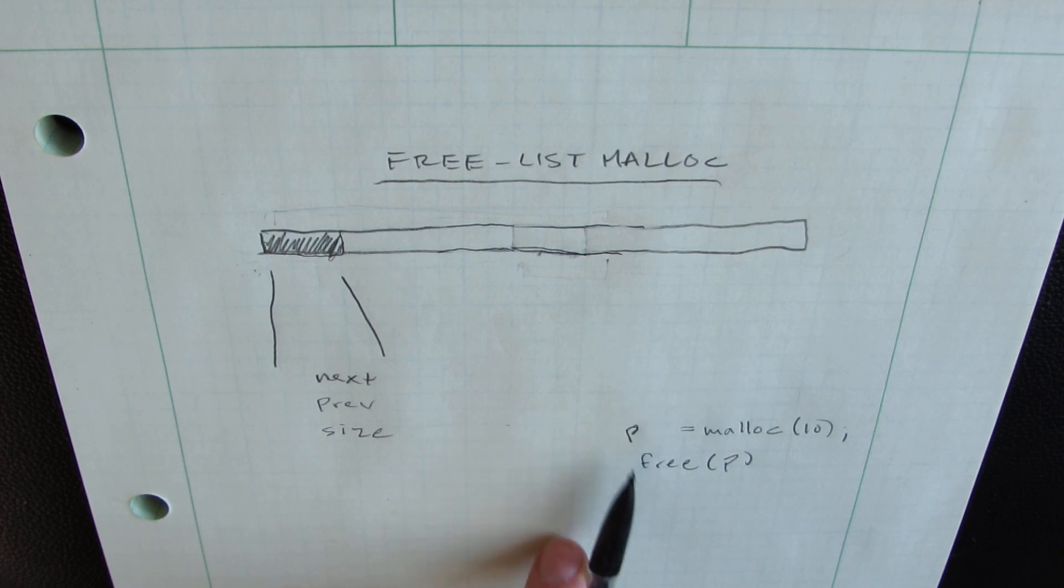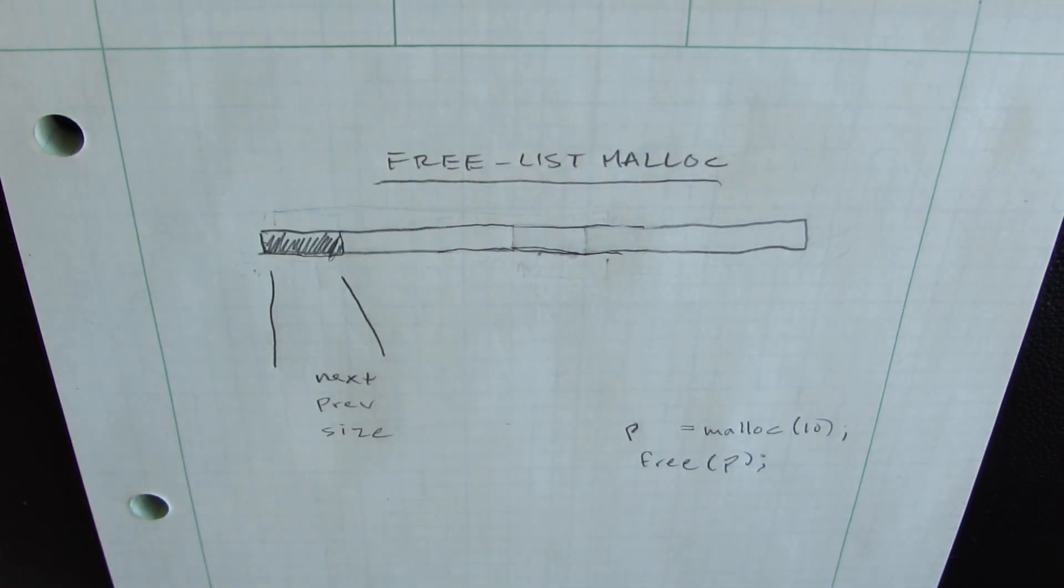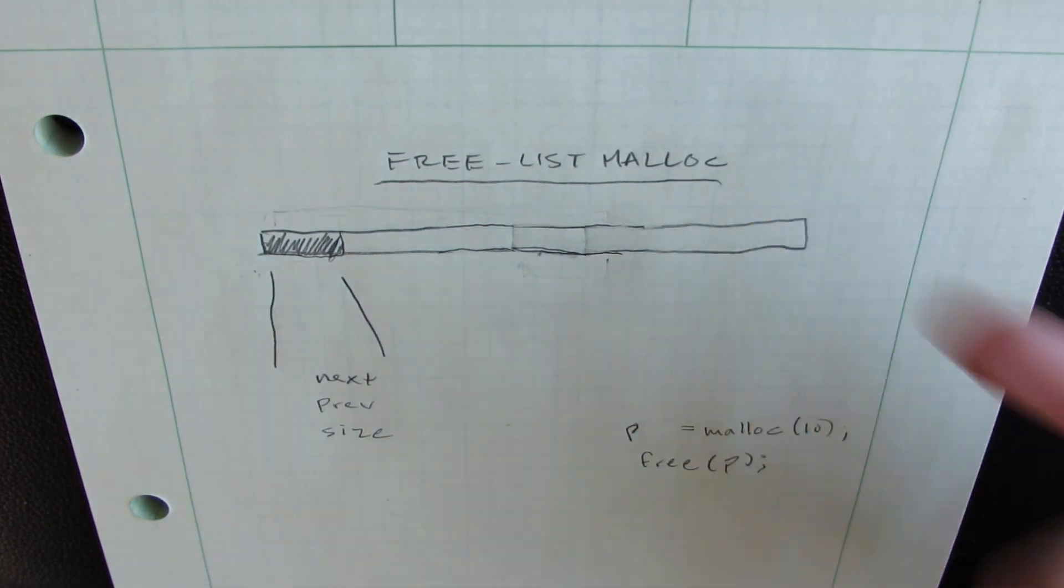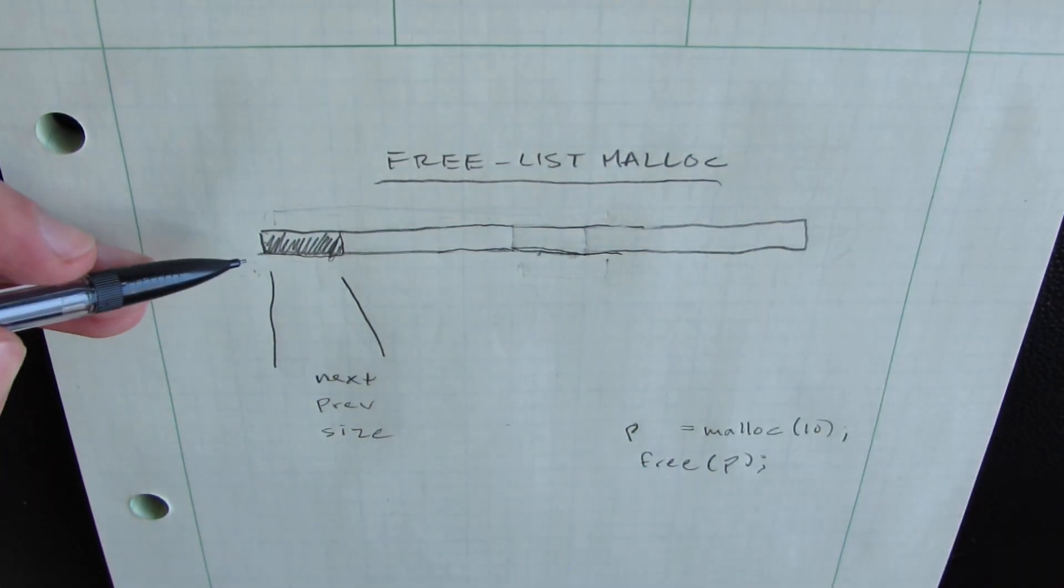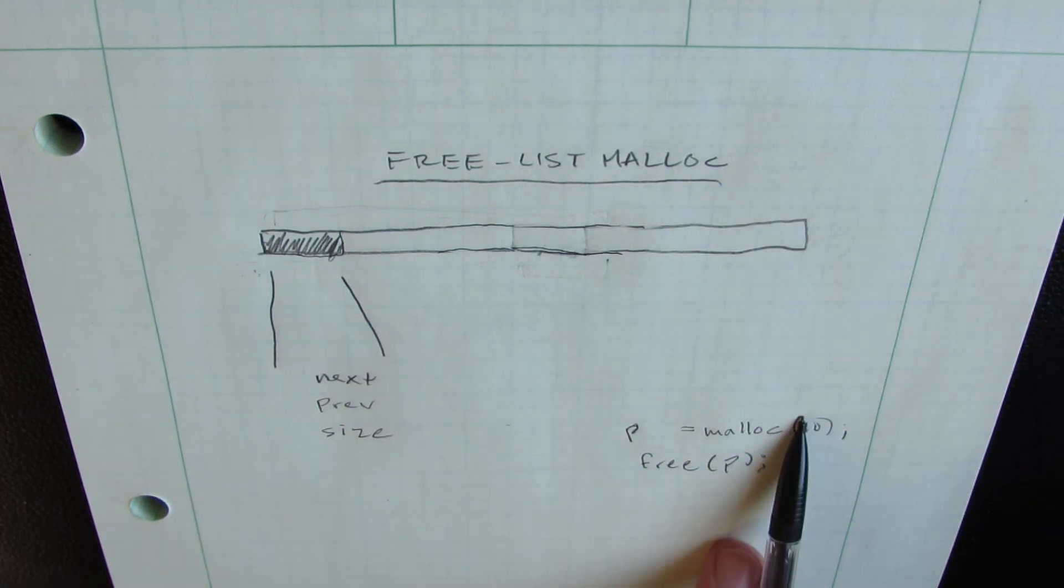Let's say, for example, we have this code. We have p equals malloc and we're mallocing 10 bytes. And then we're immediately freeing this memory. How would this code work in a free list malloc? The first thing that needs to be done is we have to search our free list for a chunk that can fit a block of size 10.